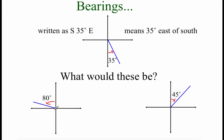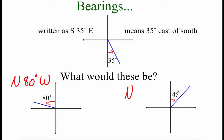Checking out this next one: this is a top angle so we call that a north direction. The angle created in here is 80 degrees and it's heading to the left, so that means west — we read this N80°W. For the one on the right, it's also a north angle since we're heading up, the angle between north and our path is 45 degrees, and since it's heading right that is east: N45°E.